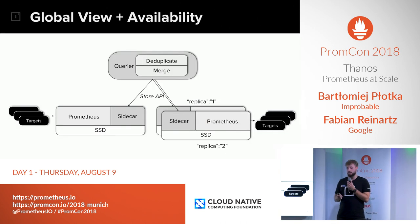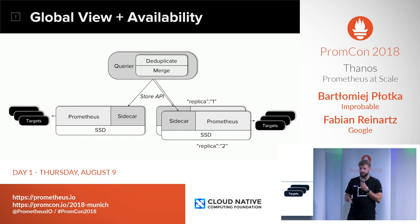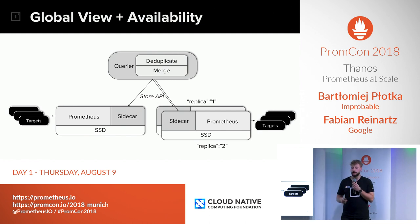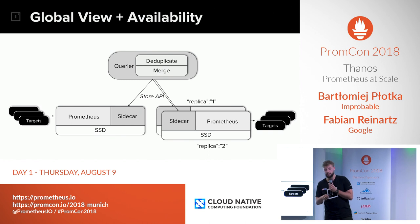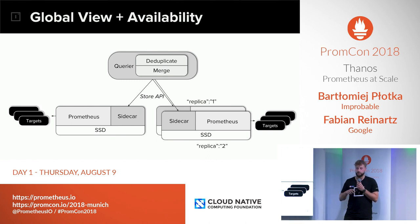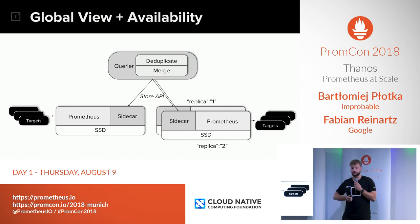Additionally, Thanos Query also implements deduplication logic, which allows you to point to multiple replicas of Prometheus that scrape the same targets. You can distinguish those by a special label that you configure — it could be 'replica' in our case — and you configure that label on the Thanos Query side. Query is then able to deduplicate the data based on that label and trims that special label from the exposed results. As an effect, from two duplicated series we get one. So HA is totally transparent for users.